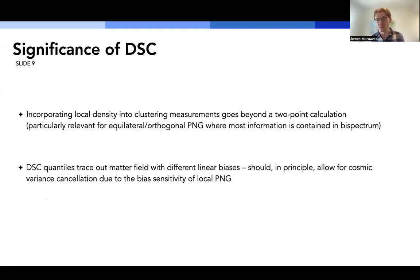Now, one might wonder, why is this useful? So the intuition behind density split is that in the process of smoothing the field, we're introducing local density information into our clustering measurements. And this means that we're no longer just dealing with a two-point measurement. We're going to higher orders. And this is particularly relevant for equilateral and orthogonal PNG, where most of the information is contained in the bispectrum. In principle, the density split quantiles also trace out the matter field with different linear biases. And thus, in theory, we would expect to see cosmic variance cancellation due to the bias sensitivity of local PNG.